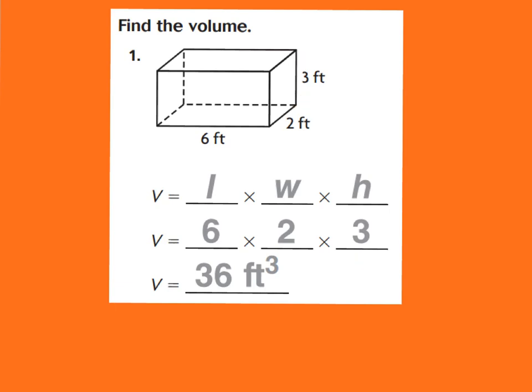If I would like to use my associative property, I'm going to group to find my base. My base will be 6 times 2, which is 12, and we all know 12 times 3 is 36. This is measured in feet, and because this is volume, we're going to make a 3 as an exponent, because that stands for cubic feet.